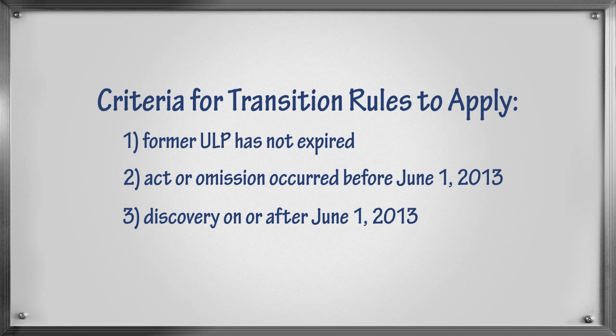To summarize, you must have a former ultimate limitation period that has not yet expired, an act or omission that occurred under the former act, and discovery that occurred under the new act. If these three criteria are met, the transition rules will apply.